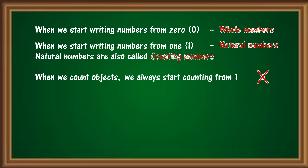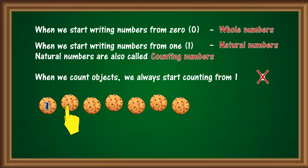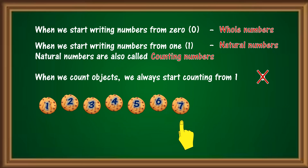For example, count the number of cookies. We start counting from 1, 2, 3, 4, 5, 6, 7. There are 7 cookies.